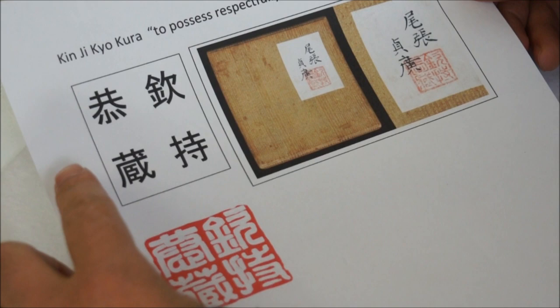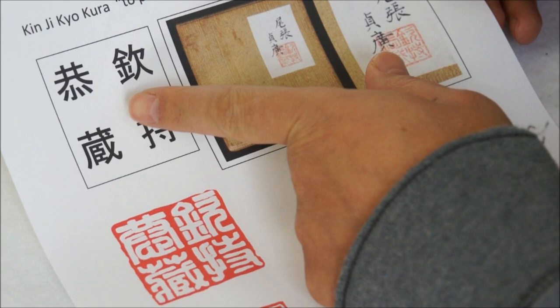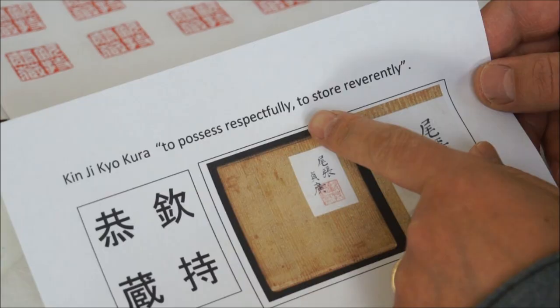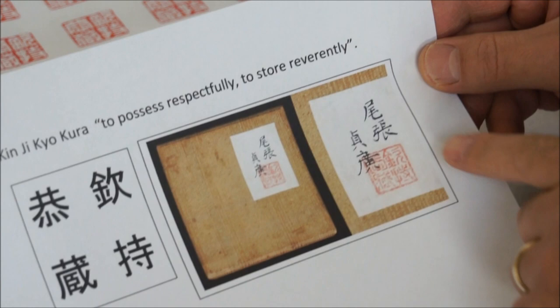The content is a Japanese seal pronounced as kinji kyokura. Kinji kyokura in Chinese is jing chi gong chang which means to process respectfully and to store reverently.